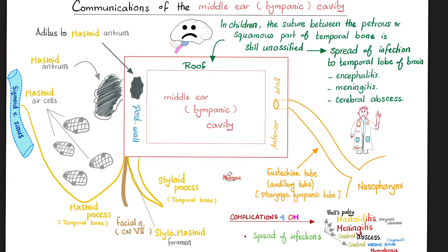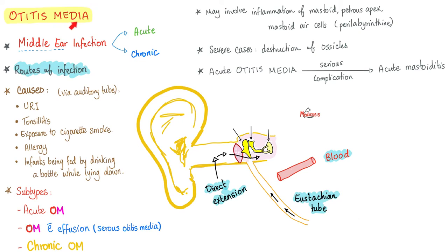We have other smaller mastoid air cells. How does the middle ear communicate with the mastoid antrum? It's called the aditus to the mastoid antrum, which means entry to the antrum. And therefore, one of the complications of otitis media is mastoiditis. Don't forget that the mastoid part of the temporal bone is related to the sigmoid venous sinus. Can this lead to sigmoid venous sinus thrombosis? You bet! Recall that otitis media could be acute, otitis media with effusion, or chronic.